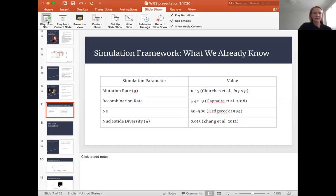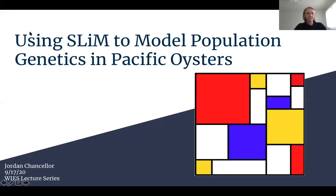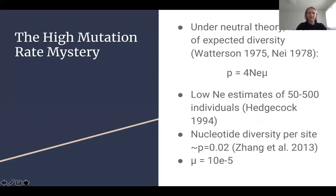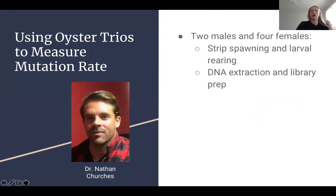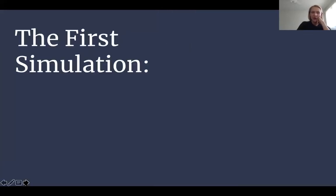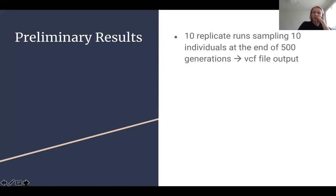So we input these parameters and we let it play, and then we hope that we can figure out something that's unique about our system and really answer some of these research questions. That was the first simulation. What I did this summer was I did 10 replicate runs sampling 10 individuals at the end of 500 generations into a VCF file output. This preliminary simulation run was mostly just exploratory to try and get familiar with the program, get familiar with VCF files and VCF tools and actually calculating these summary statistics.